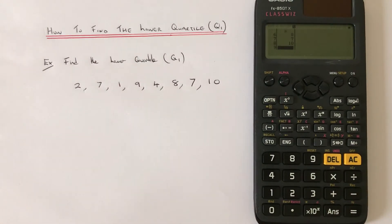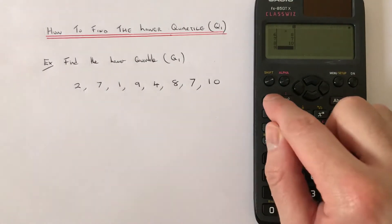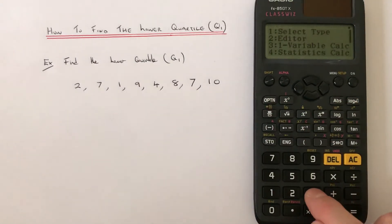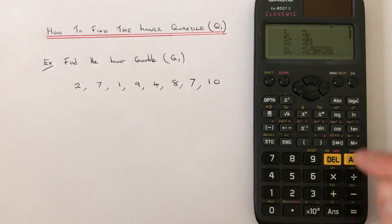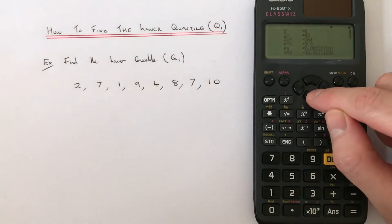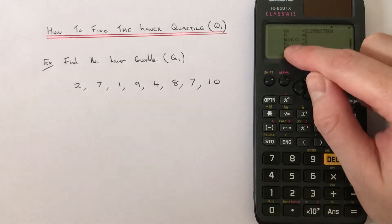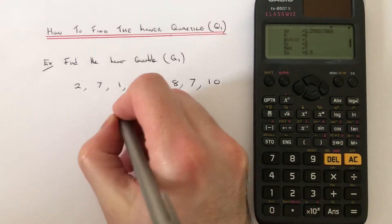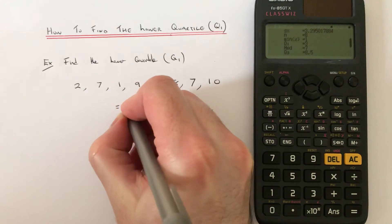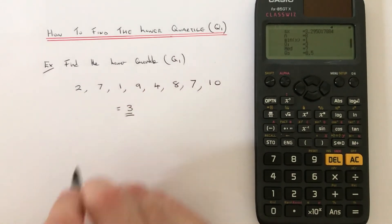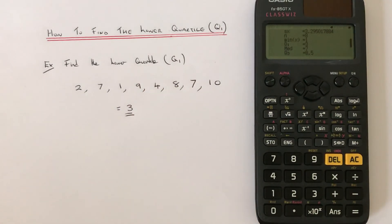Now press option number three and scroll down to the second page. We look for Q1, which represents the lower quartile, and you can see that is number three.